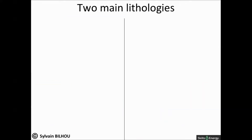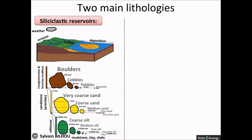I will now introduce the most common reservoir lithologies. First, two main types of sedimentary rocks can constitute good reservoirs: siliciclastic rocks and carbonate rocks. Siliciclastic rocks are sedimentary rocks that are almost exclusively silica-bearing, either as forms of quartz or silicate minerals. They are formed by lithogenic processes and deposited through mechanical processes. They are classified according to the size of the grains they contain, from boulders to clay, as shown on the graph below. Facies from boulders to fine sand can constitute petroleum reservoirs. Siliciclastic reservoirs account for about 50–60% of the world's oil and gas reserves.